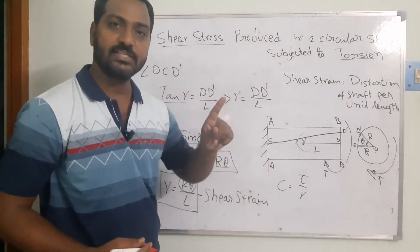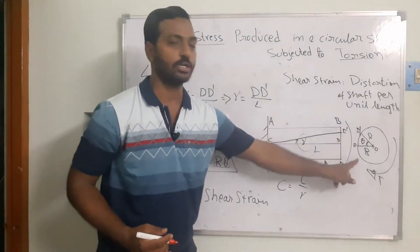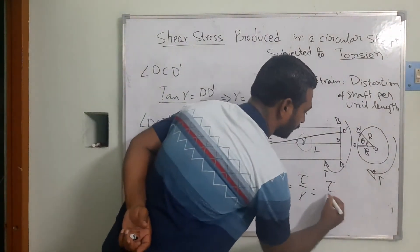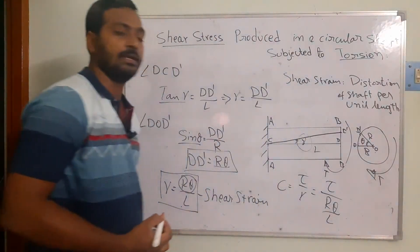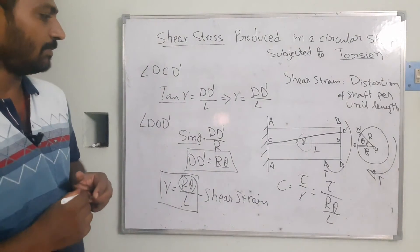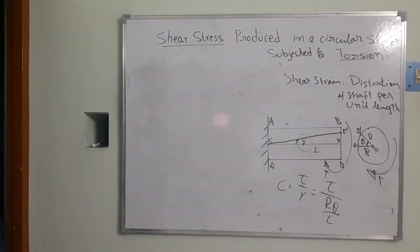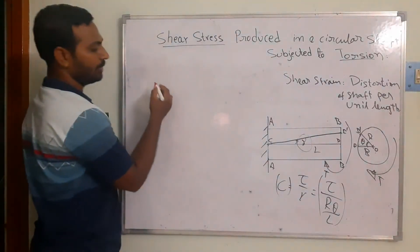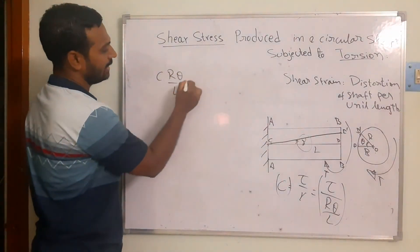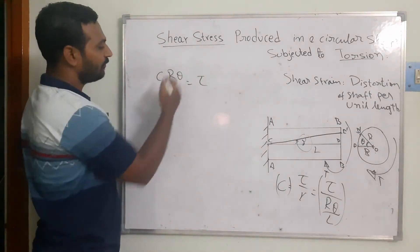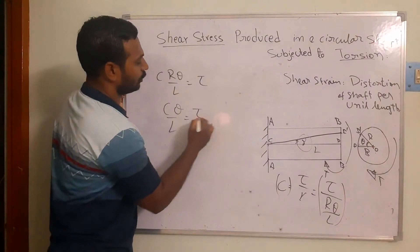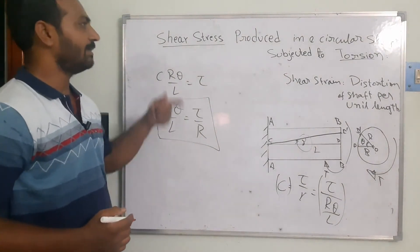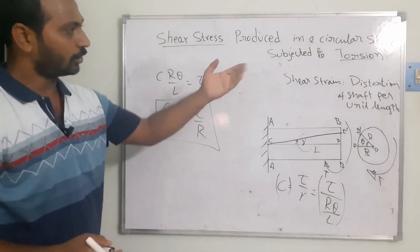Here τ is the shear stress at the outer surface and γ = Rθ/L. Substituting: C = τ / (Rθ/L). Rearranging: CRθ/L = τ, and further simplifying: Cθ/L = τ/R. This is the governing equation when a member is subjected to torsional loads.